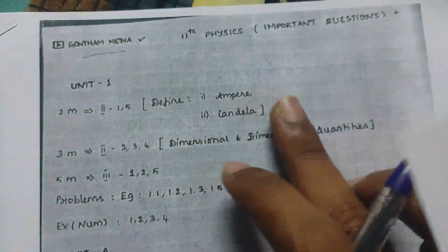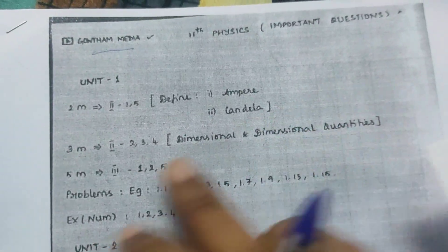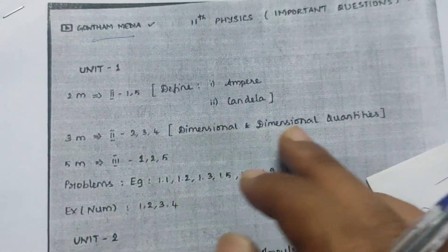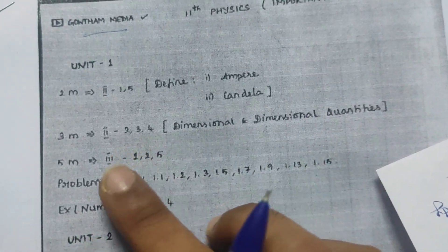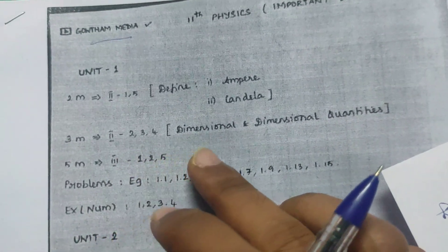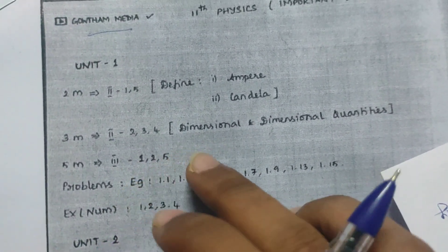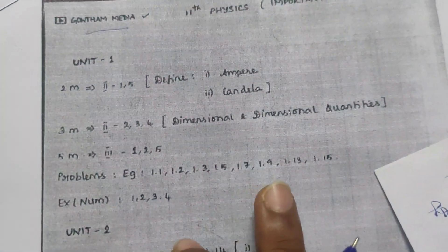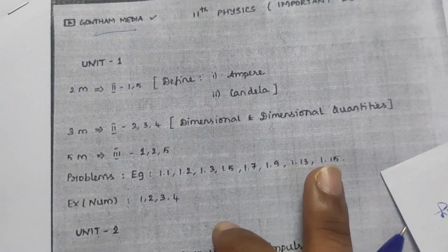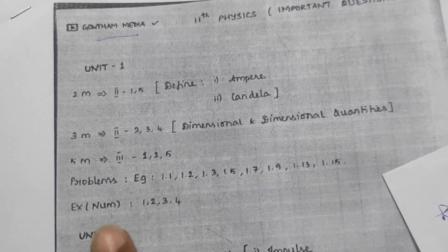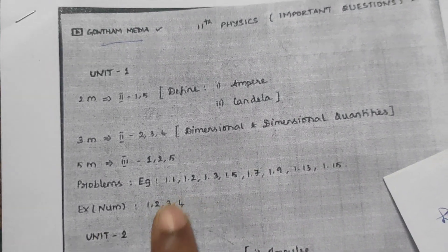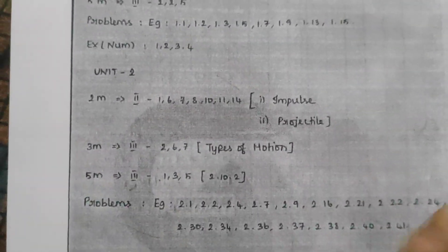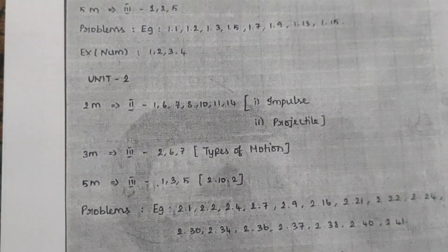In unit 1, the 2-mark questions are: Definite Ampere. Question numbers 2, 3, 4 for 3 marks; 2, 3, 4 for 5 marks; 3 marks 1, 2, 5; 1, 2, 5. Numbers 7, 5, 9, 13, 15; 1, 2, 3, 4; 1, 2, 3, 4; 1, 2, 3, 4. 2 marks, 2 marks.